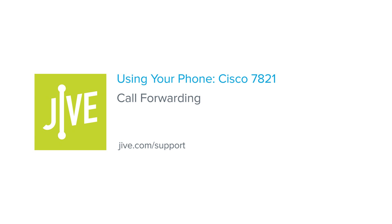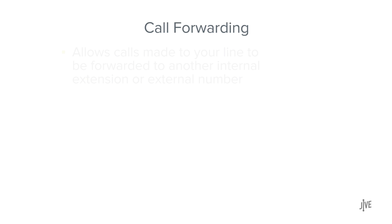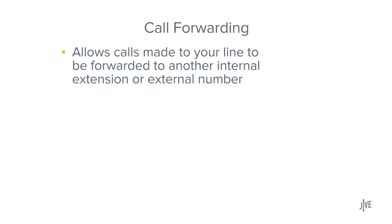In this video, you will learn how to enable and disable call forwarding on a Cisco 7821 phone. Call forwarding allows calls made to your line to be forwarded to another internal extension or external number.